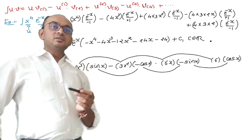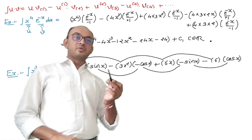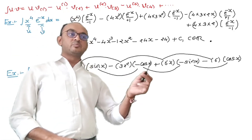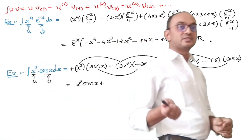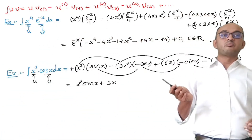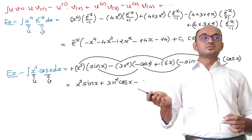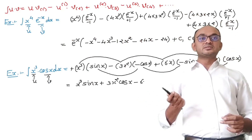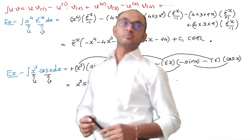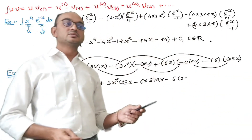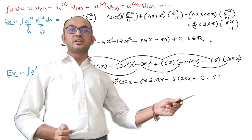Starting with plus sin(x), the signs alternate plus, minus, plus, minus. Therefore the final answer is: x^3·sin(x) + 3x^2·cos(x) − 6x·sin(x) − 6·cos(x) + c, where c is a real number.